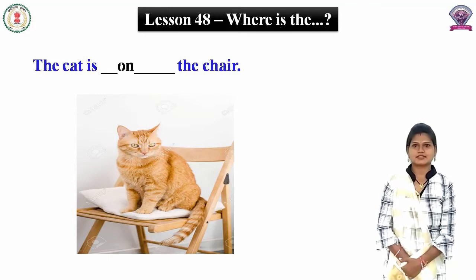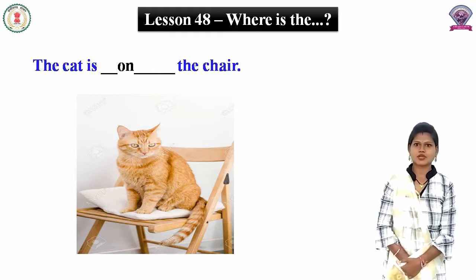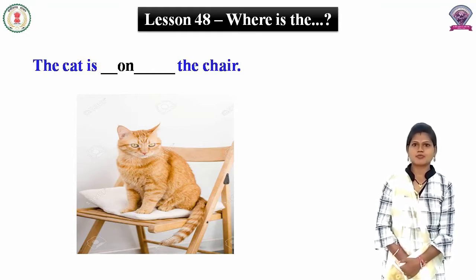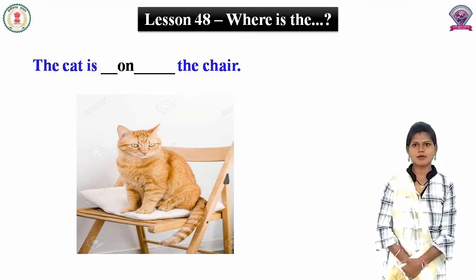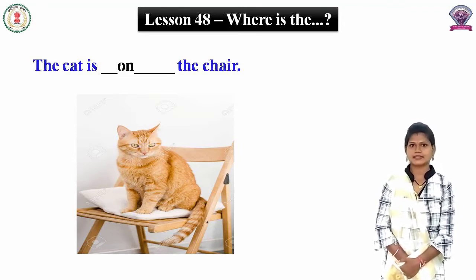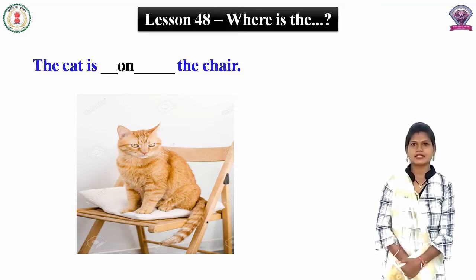Look at this picture. इस picture में आपको क्या दिखाई दे रहा है? Where is the cat? Cat कहाँ पर है? तो cat जो है वो कुर्सी पर है। जब कोई वस्तु किसी वस्तु के उपर होती है तो हम 'on' लगाते हैं। चलिए sentence को complete करते हैं — the cat is on the chair.